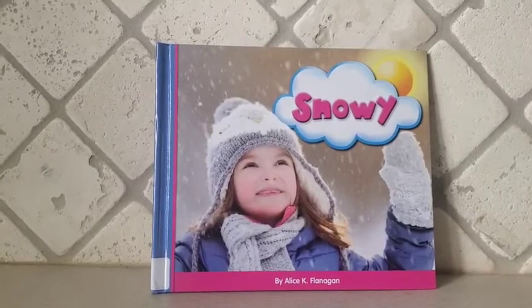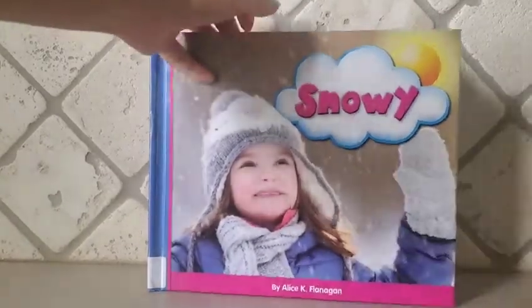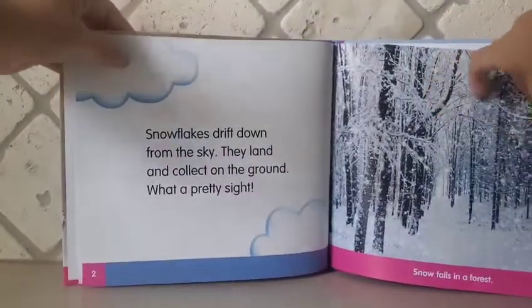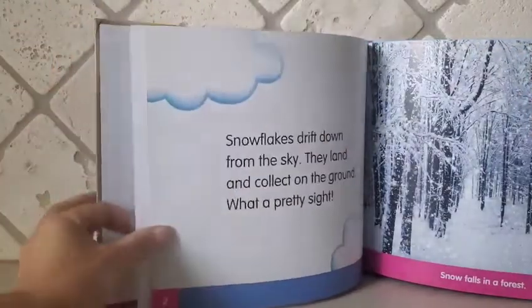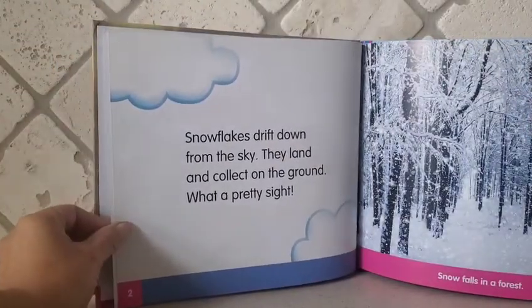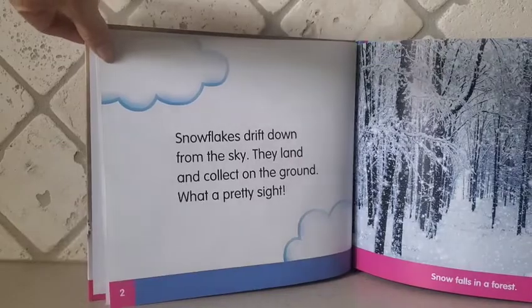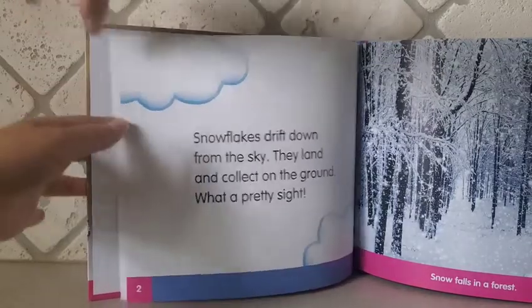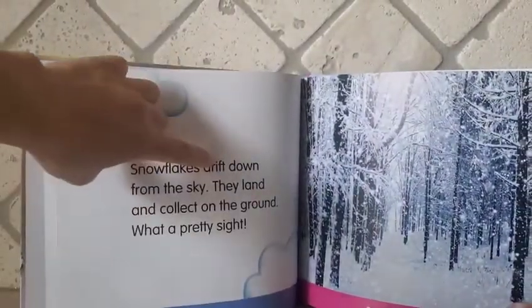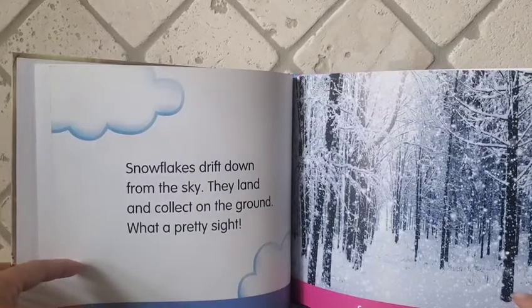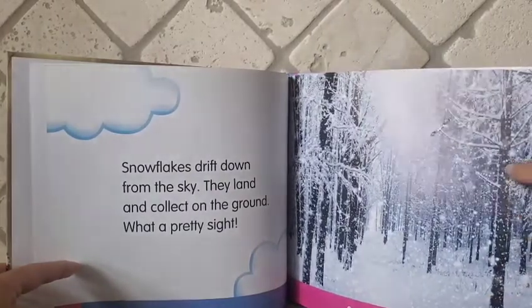Snowy by Alice K. Flanagan. Snowflakes drift down from the sky. They land and collect on the ground. What a pretty sight! Snow falls in a forest. The word 'drift' means the snow is being carried slowly by the air, so it drifts slowly from the sky.